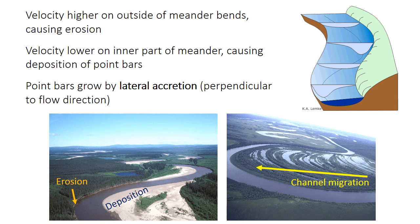Because meandering channels are typically sinuous, there are noticeable differences in current velocity within the channel. The current flows faster on the outside of the bend because it has to travel a greater distance, and that greater velocity creates higher shear stress against the bank, which leads to erosion. Slower flow on the inside part of the bend tends to promote deposition of sediment and formation of the point bar. Because of that pattern of erosion and deposition, the meander bend tends to grow outwards, getting elongated and more bendy. The point bar also grows by lateral accretion perpendicular to the flow direction. You can see this in the right-hand picture, where little curved ridges mark the former position of the point bar as the bend migrated to the left.